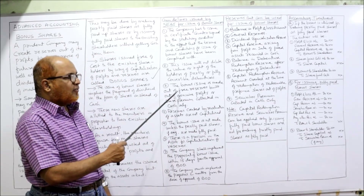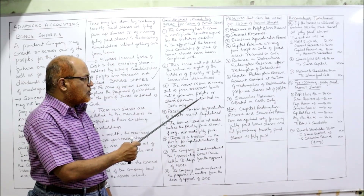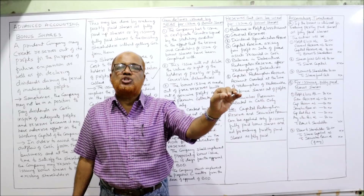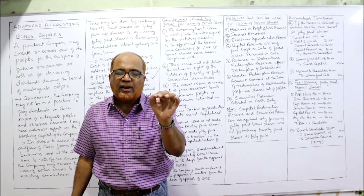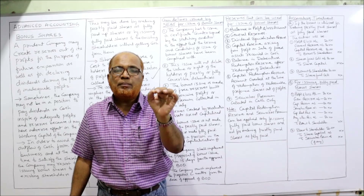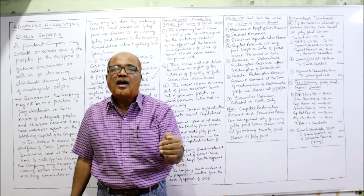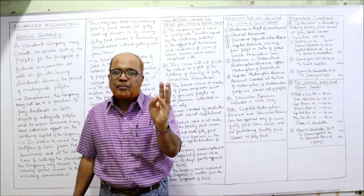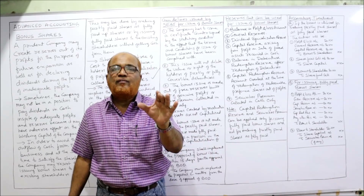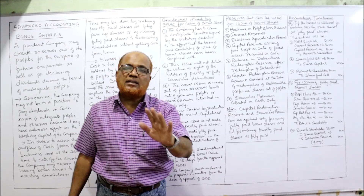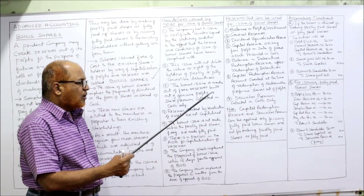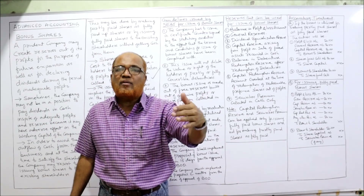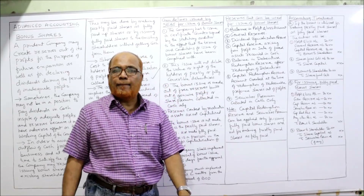Thirdly, the bonus issue must be made out of free reserves built out of genuine profits or share premium collected in cash. The bonus can be issued from free reserves that are genuinely made out of profits, and from the share premium account received in cash. Reserves created for revaluation of assets cannot be capitalized. If reserves are created by revaluation of assets, that reserve is not available for declaring bonus.